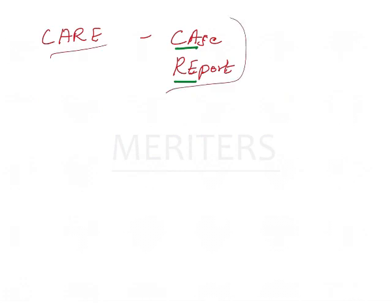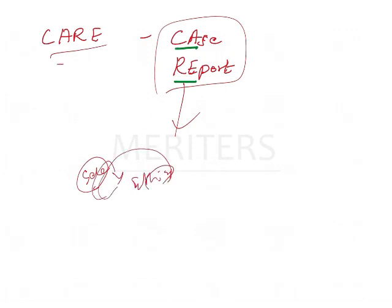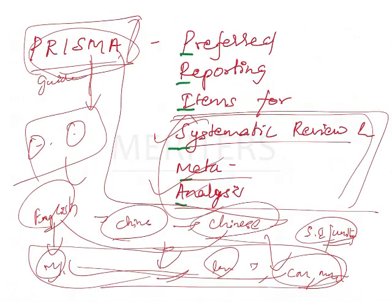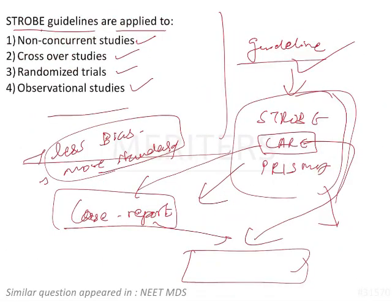Coming to CARE — CARE is for case reports. It covers how we select the case, how we treat the patient, and whether we follow ethics. If we follow the CARE guidelines, the study becomes standardized. Coming back to the question, the answer is STROBE guideline, which is used for observational studies — option 4 is the correct answer.